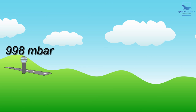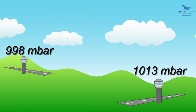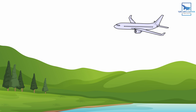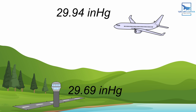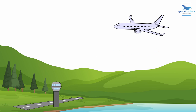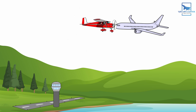Air pressure can change from one location to the next, and it can even change throughout the day. This can affect our altimeter reading and we need to correct for it. For example, if you took off from an airfield with your altimeter set to the local pressure of 29.94 inches of mercury, and then arrived at another airfield where the pressure was 29.69, then you would be 250 feet below what your altimeter indicated. That could have some very nasty consequences, including running into obstacles or a mid-air collision with an aircraft cleared for a different altitude.